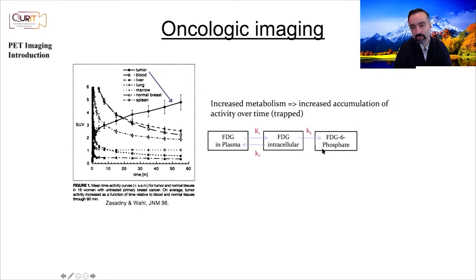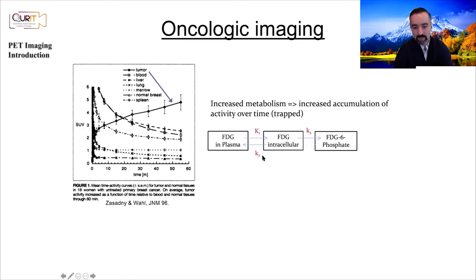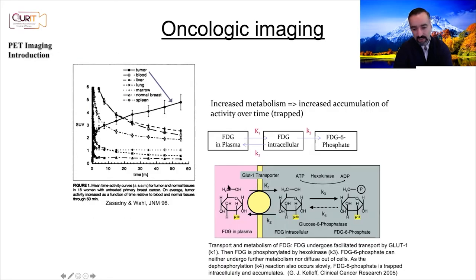You have an accumulation of fluorodeoxyglucose in a tumor — it keeps accumulating because you have high rates of metabolism. Whereas in many other organs there is an initial uptake as it enters the cells, but then it leaves as the blood is cleared from fluorodeoxyglucose. So essentially you have FDG in the plasma, then it's phosphorylated to FDG-6-phosphate, and that is where it's trapped, accumulating when you have higher rates of metabolism.